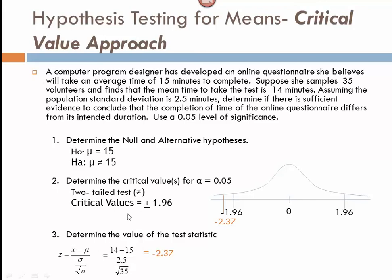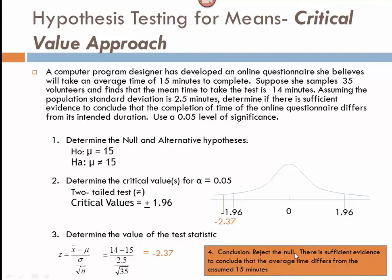Negative 2.37 falls way to the left of negative 1.96, so we're beyond our critical value. That tells us our sample data differed enough to be considered statistically significant. Our conclusion is to reject the null — we're in the rejection region. There is sufficient evidence to conclude the average time differs from the assumed 15 minutes. Remember: if we reject the null, there is sufficient evidence to support the alternative; if we fail to reject, there is insufficient evidence.